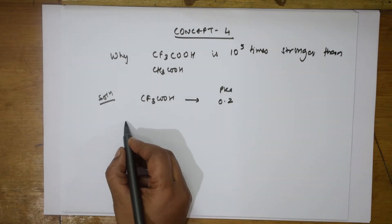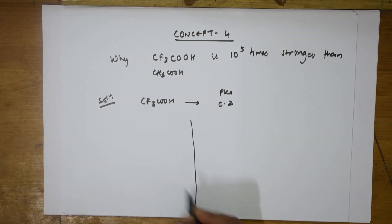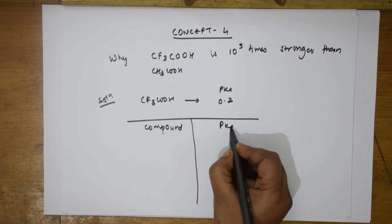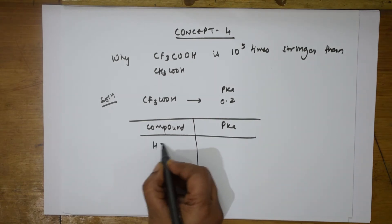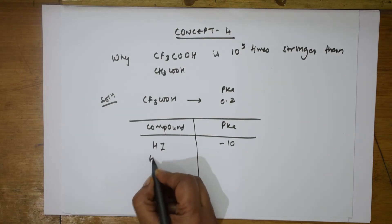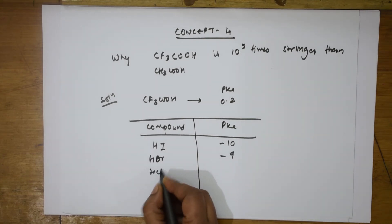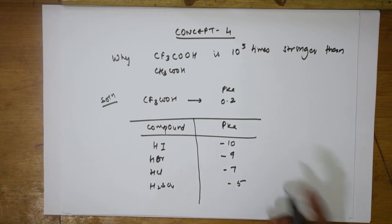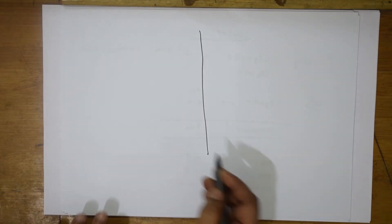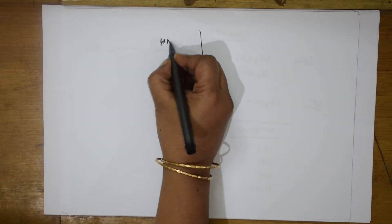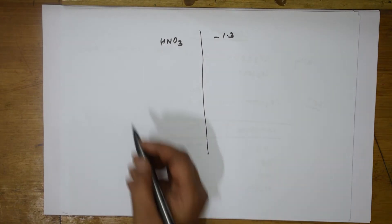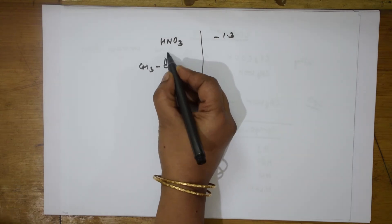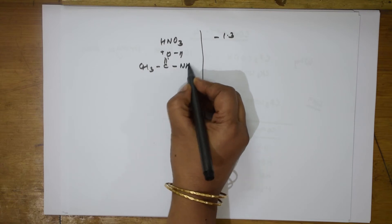For further information I will give you certain data that will be very useful in the exam. Let me draw a line — many compounds are there where they give you the order of which is more acidic. The pKa values are: HI is −10, HBr is −9, HCl is −7, H2SO4 is −5, and HNO3 is −1.3.